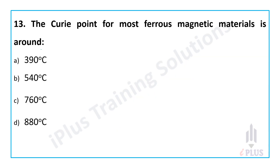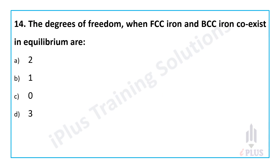Question 13: The Curie point temperature for most ferromagnetic materials is 760 degrees Celsius. At the Curie point, most ferromagnetic materials become paramagnetic — they lose their magnetic properties. This transition temperature is called the Curie temperature or Curie point.